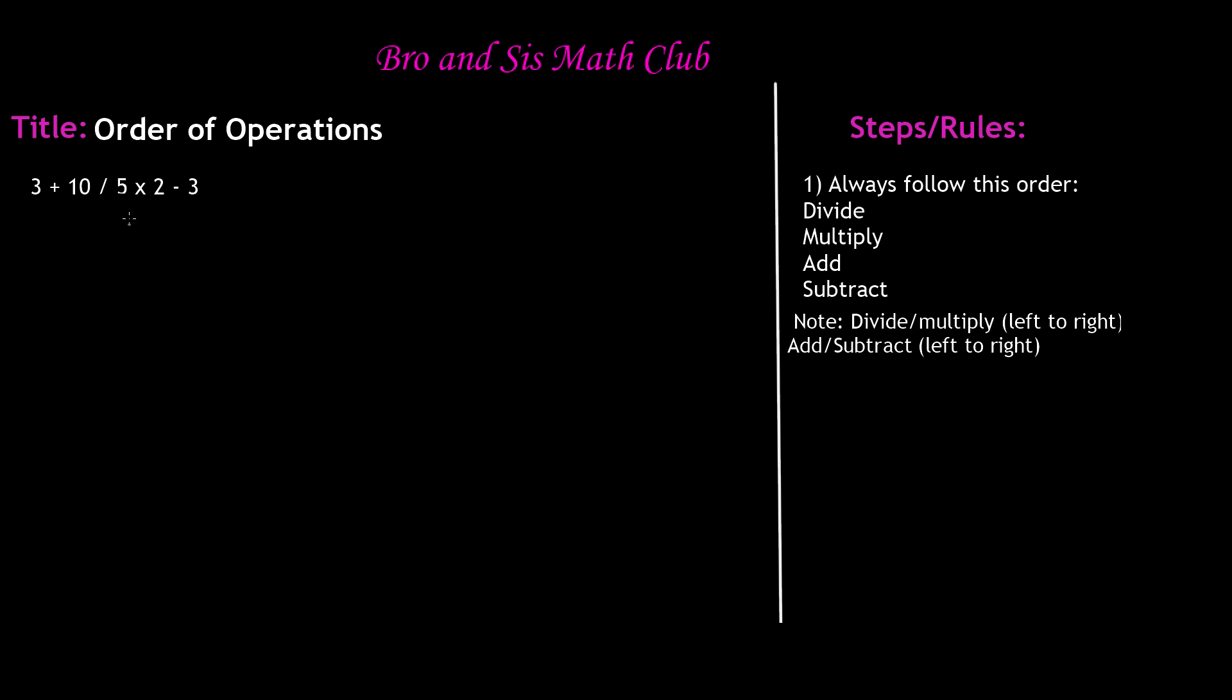So if you look at this, division comes first because 10 is being divided into 5. So 10 divided by 5, as we all know, is 2. Now we're going to reword this problem, and this time we're going to write 2 instead of writing 10 divided by 5.